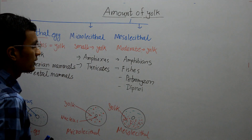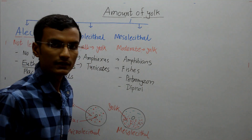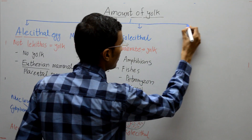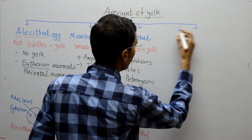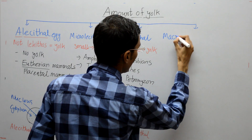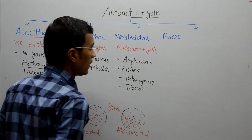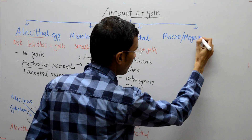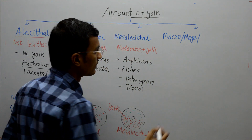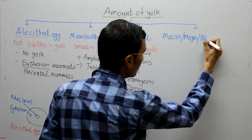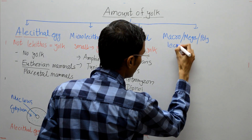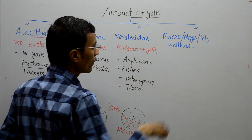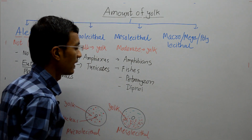The fourth type is the macrolecithal egg, also known as megalecithal or polylecithal egg. So the fourth type is macro-, mega-, or polylecithal.